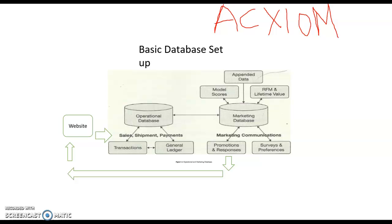Multivariate analysis helps us understand more about our MVCs. Axiom is called upon to add all their knowledge from the databases they own and represent, to find out everything they can about you. This is added to what the company already knows, so now I have much more psychographic and demographic information about each one of my MVCs.